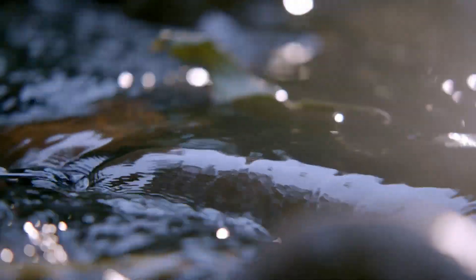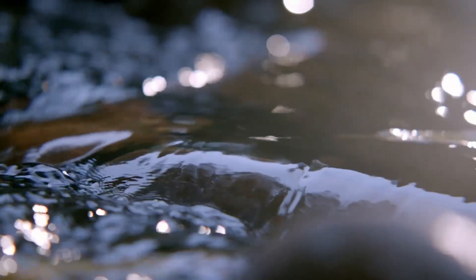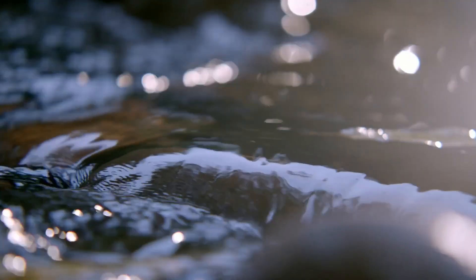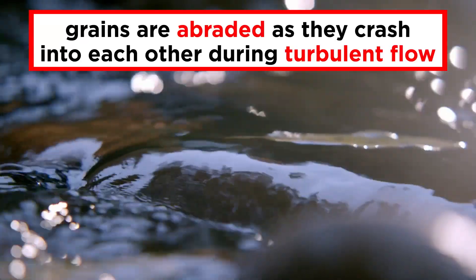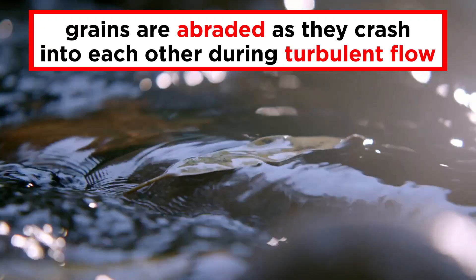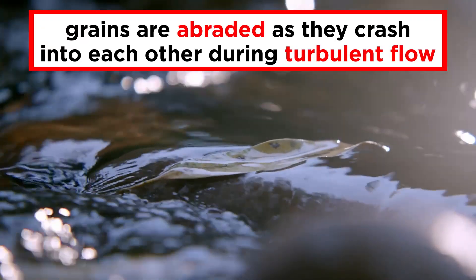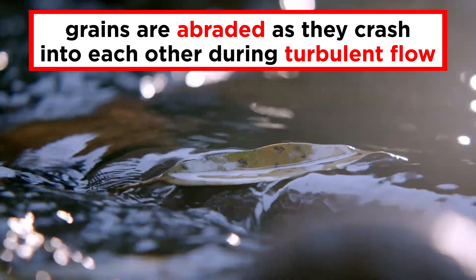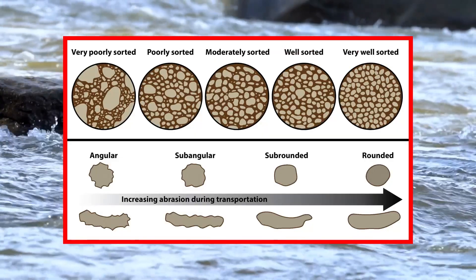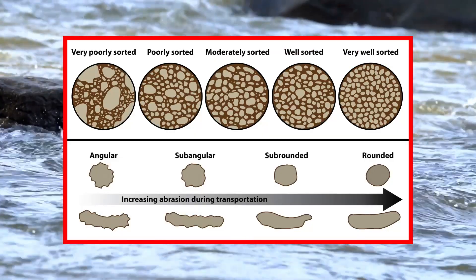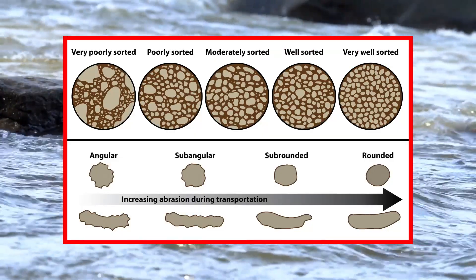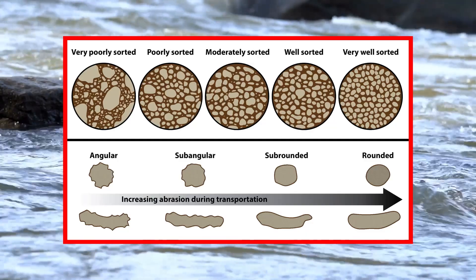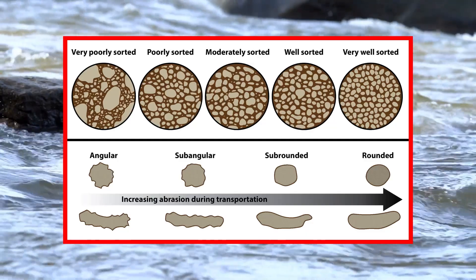In addition to being chemically altered, or as geologists say, chemically weathered during transport, grains of sediment are also abraded as they crash into each other during turbulent flow. This abrasion makes the grains more rounded, and the longer a grain of sediment is transported, the more rounded it becomes.